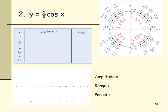For this example we have the function y equals one half times cosine x. Based on the cosine function, we look at the first coordinate of the ordered pair on the unit circle. At angle zero the value is one, at pi over two the value is zero, at pi the value is negative one, at three pi over two the value is zero, and at two pi the value is one.